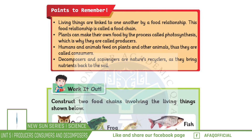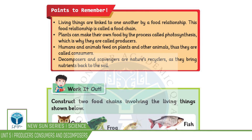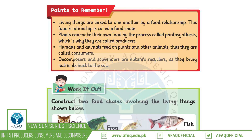We eat the food made by those plants. Consumers have different types: herbivores, carnivores, and omnivores.